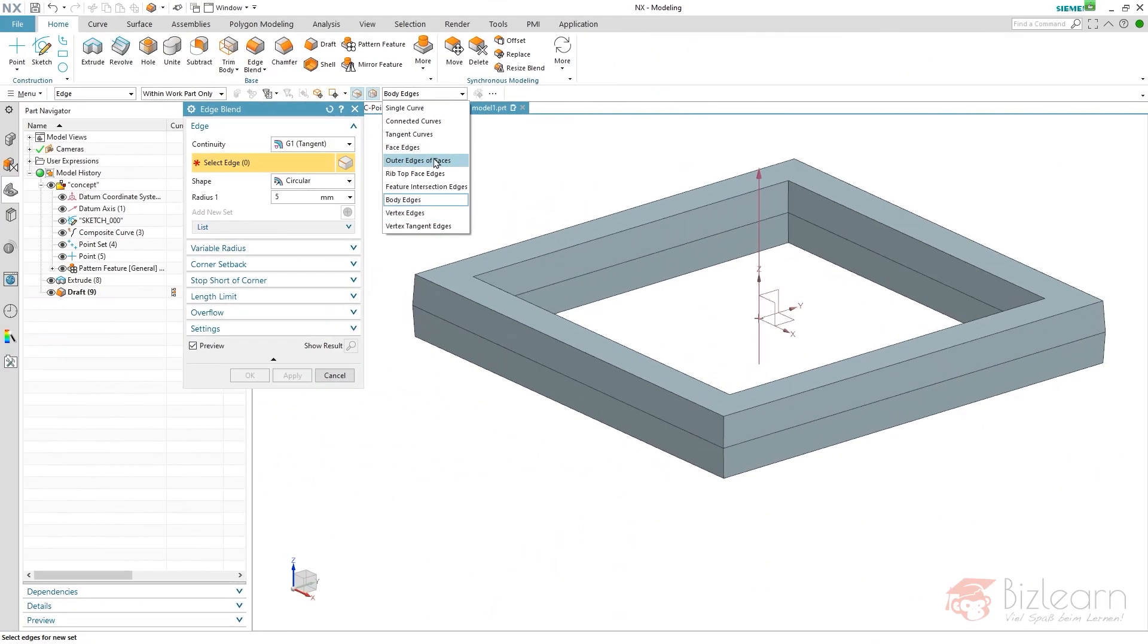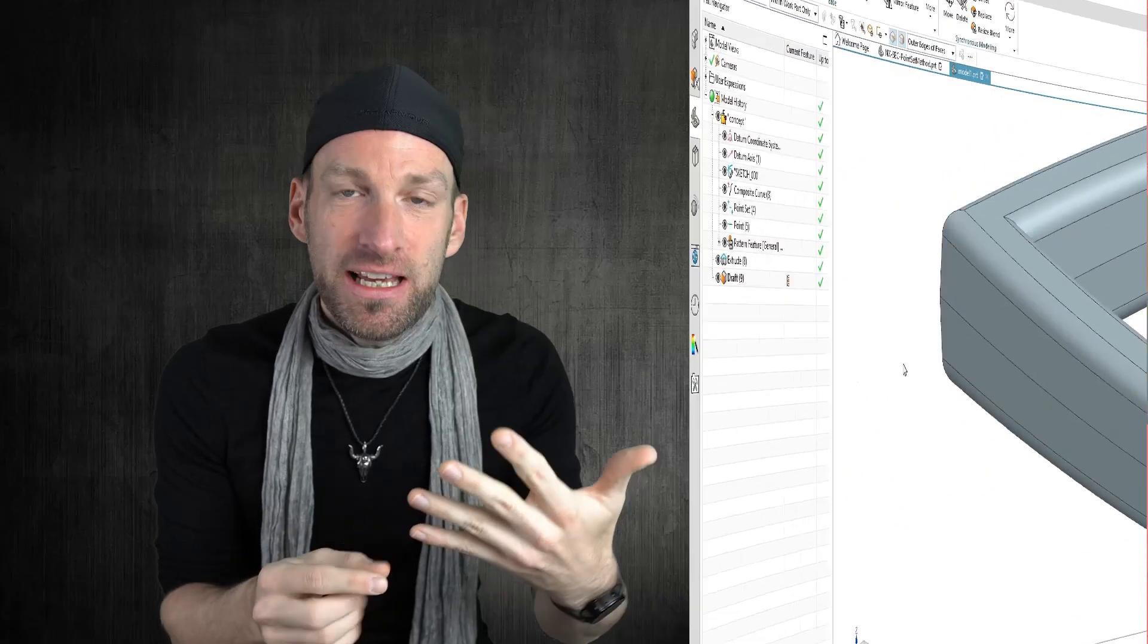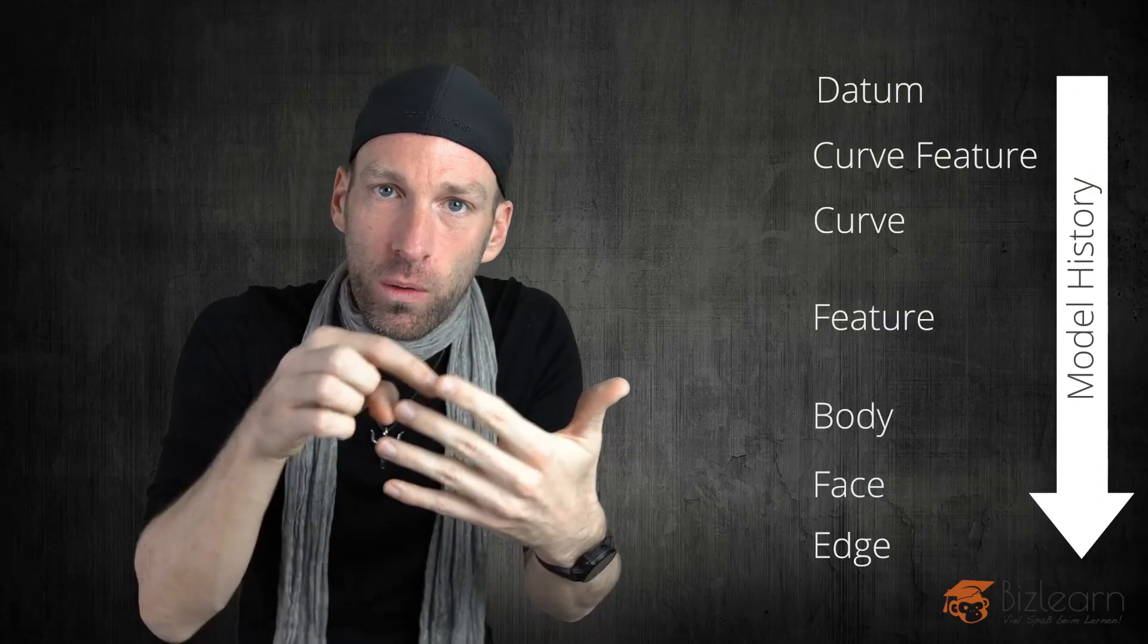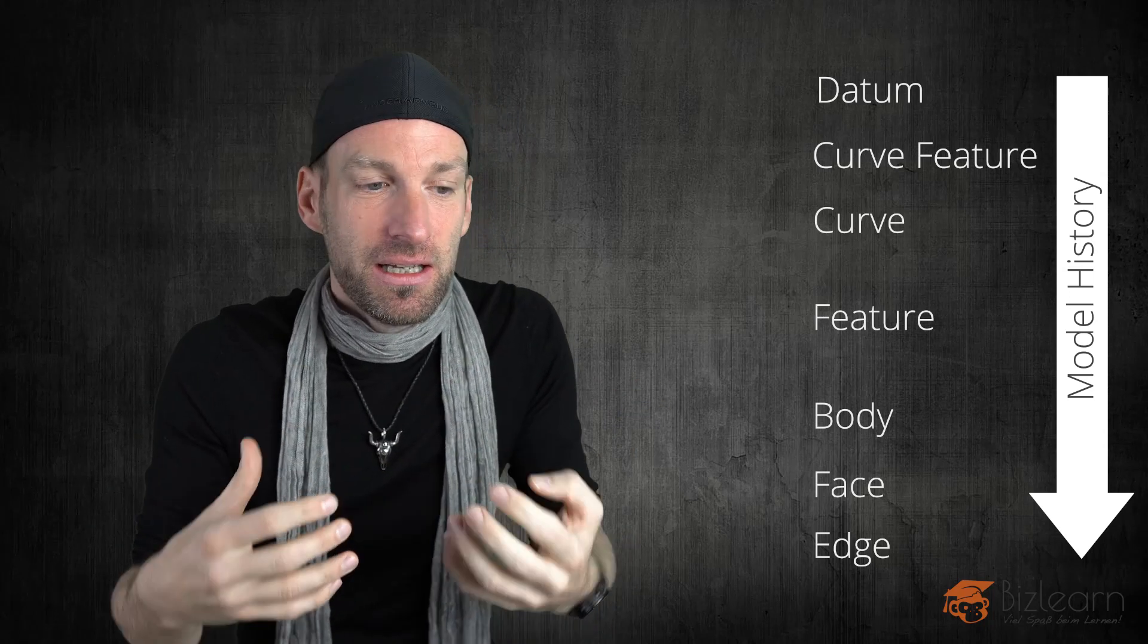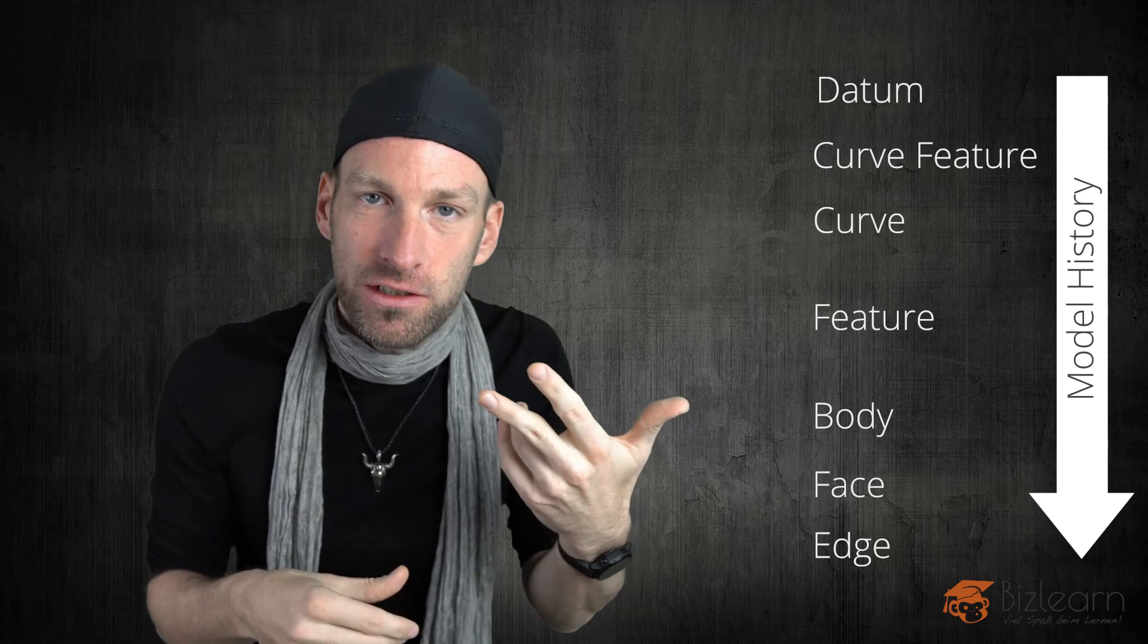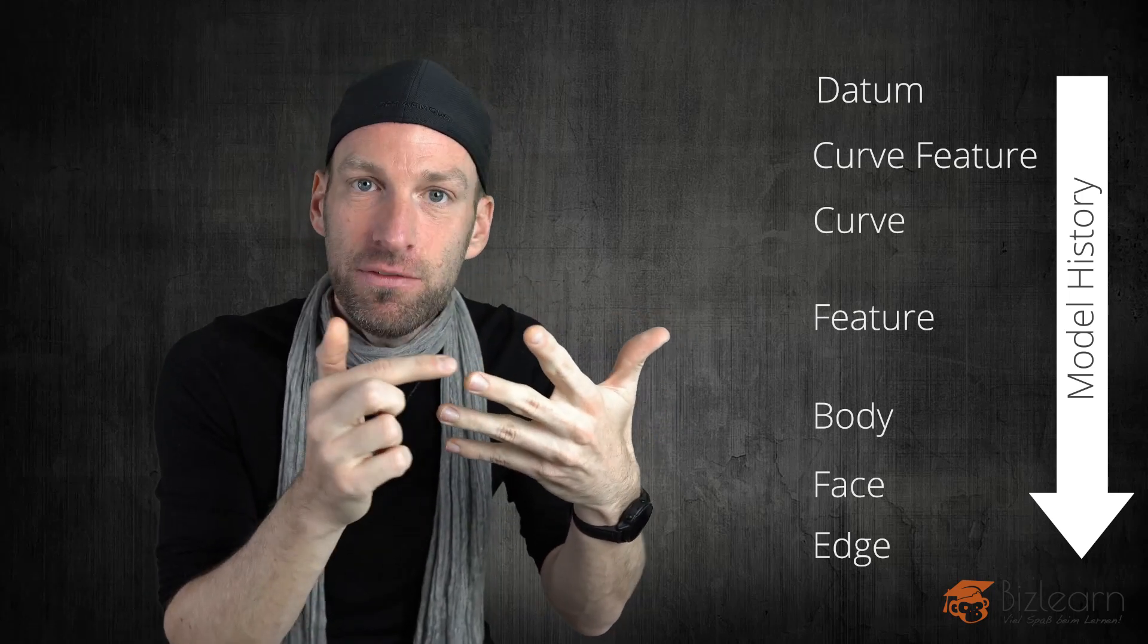But you could also create a relation to faces. Meaning face edges. There are a couple of rules you can choose from. Or feature intersection curves. Which is a relation to a feature which is older, even older than the body. Meaning you can create a relation to the extrude feature, but not the body which is resulting. And this is even more stable.